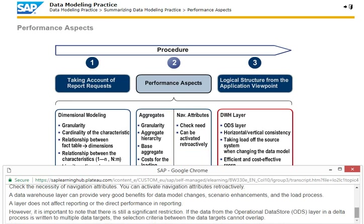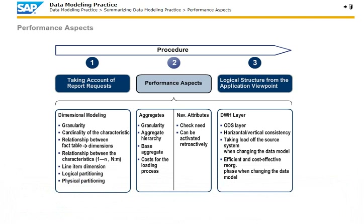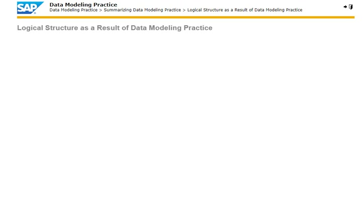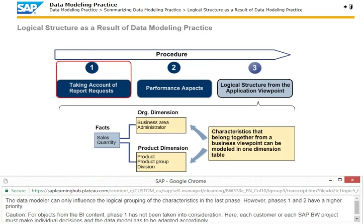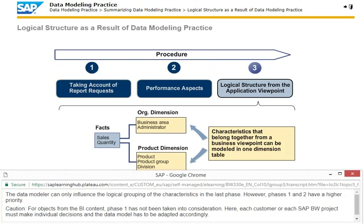A data warehouse layer can provide very good benefits for data model changes, scenario enhancements and the load process. A layer does not affect reporting or the direct performance in reporting. However, it is important to note that there is still a significant restriction. If the data from the Operational Data Store or ODS layer in a delta process is written to multiple data targets, the selection criteria between the data targets cannot overlap. The data modeler can only influence the logical grouping of the characteristics in the last phase. However, phases 1 and 2 have a higher priority. For objects from the BI content, Phase 1 has not been taken into consideration. Here, each customer or each SAP BW project must make individual decisions and the data model has to be adapted accordingly.